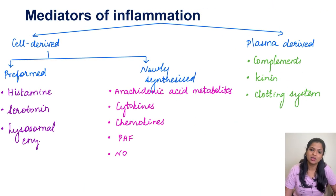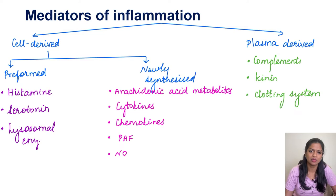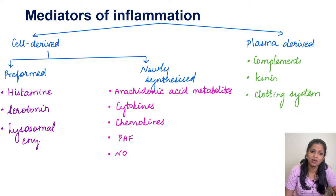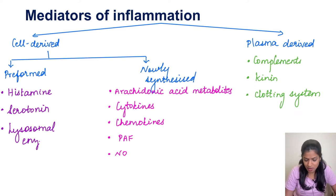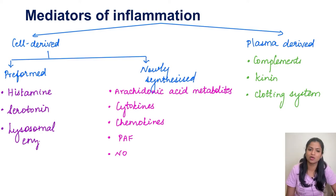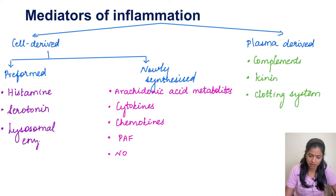Starting with the inflammatory mediators, we have two types: cell derived mediators and plasma derived mediators. Under cell derived mediators we have pre-synthesized and newly formed mediators. Under pre-formed mediators we have histamine, serotonin and lysosomal enzymes. Under newly synthesized mediators we have arachidonic acid metabolites, platelet activating factor, chemokines, cytokines and nitric oxide. Under plasma derived mediators we have complements, kinin system and the clotting system.